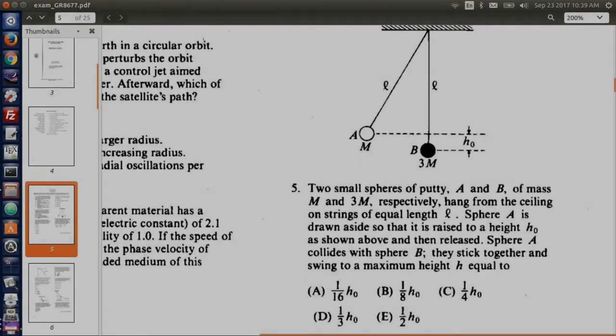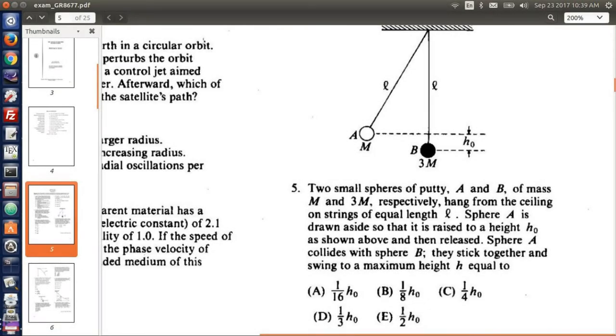Two small spheres of putty, A and B, of mass M and 3M respectively, hang from the ceiling on strings of equal length L. Sphere A is drawn aside so that it is raised to a height H₀ as shown above and then released. Sphere A collides with sphere B. They stick together and swing to maximum height H, and then we have the answer choices.